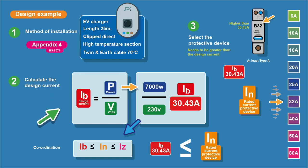Next we calculate our design current. This EV charger is 7000 watts. To get the design current, we divide the power — 7000 watts — by the voltage, which is 230 volts, and we get our IB, our design current, of 30.43 amps.